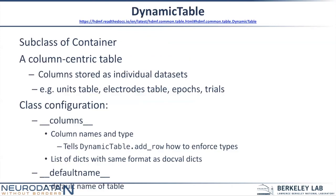The next container I'll talk about is DynamicTable. Subclasses of DynamicTable are all over the specification — Units are stored in a DynamicTable, electrodes are stored in a DynamicTable. This is a column-centric table, meaning columns are stored as individual datasets. The implication is that we can add additional datasets or columns dynamically — that's where the term DynamicTable comes from. Epochs and trials are also DynamicTables.